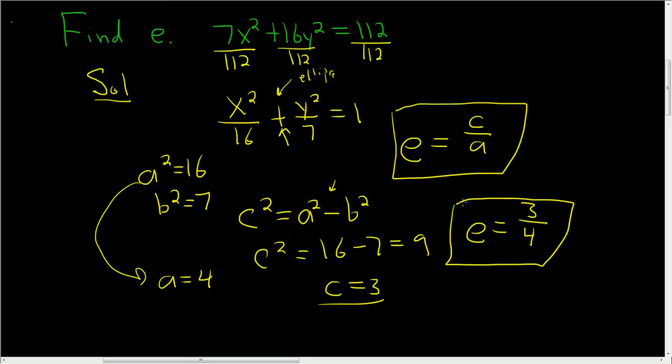And our answer does make sense. For an ellipse, the eccentricity should always be between 0 and 1, and it is. 3 fourths is 0.75, which is definitely between 0 and 1.